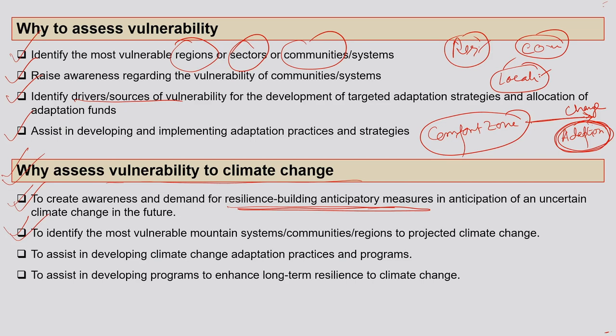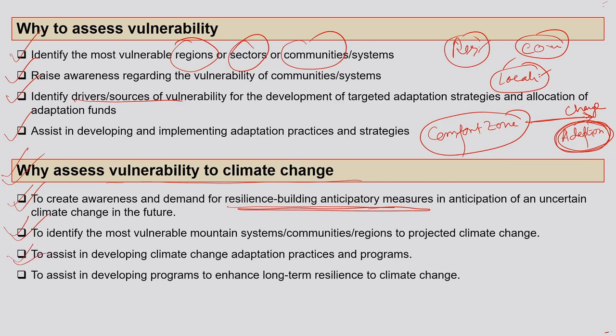Climate change projections can be studied through various models — Global Circulation Models (GCMs) and Regional Climate Models (RCMs). The output from these climate models feeds into water models or crop models, providing an estimation of changes in crop production or yield due to changes in climate. This also assists in developing climate change adaptation practices, programs, and enhancing long-term resilience to climate change.